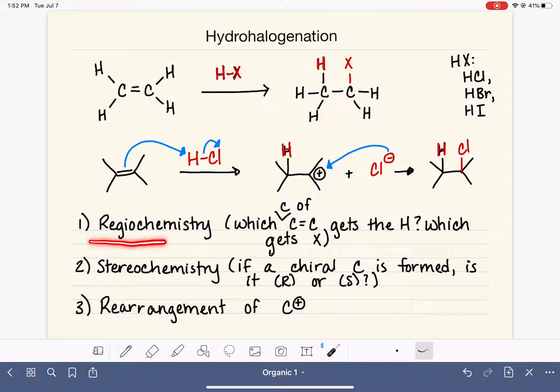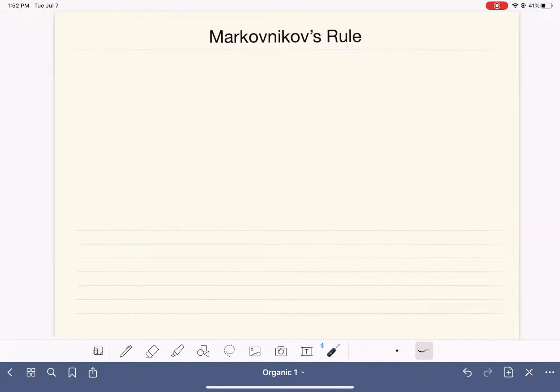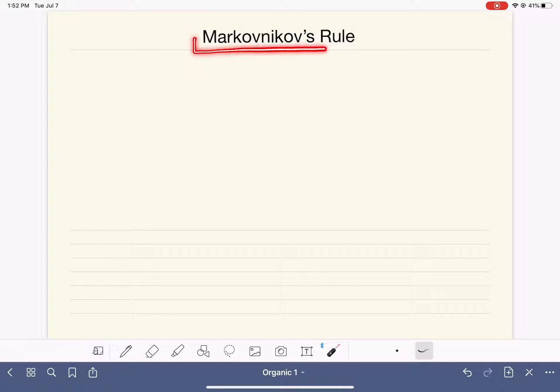To help us accurately predict the regiochemistry of the hydrohalogenation reaction, we're going to use a concept called Markovnikov's rule. To illustrate Markovnikov's rule, I am going to do an example of an alkene addition using this alkene right here. It's a pretty simple alkene. We have three methyl groups on the carbon-carbon double bond and one hydrogen. And we're going to react this alkene with a molecule of HBr.